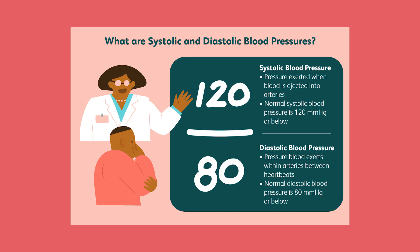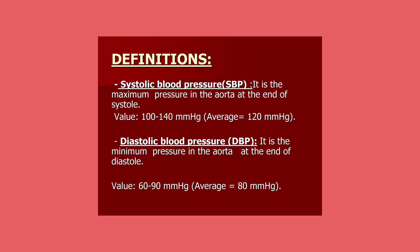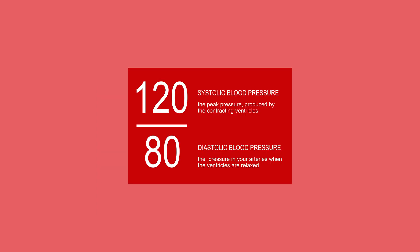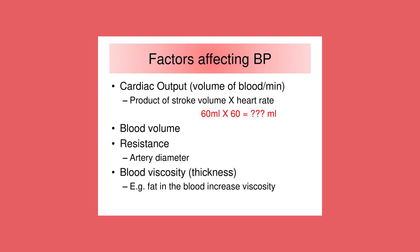A typical healthy individual produces a systolic pressure between 90 to 120 millimeters of mercury and a diastolic pressure between 60 to 80 millimeters of mercury. Taken together, a normal reading is a bit lesser or higher than 120 over 80 millimeters of mercury. In any pumping system, several things can increase the force on the wall of the pipes.